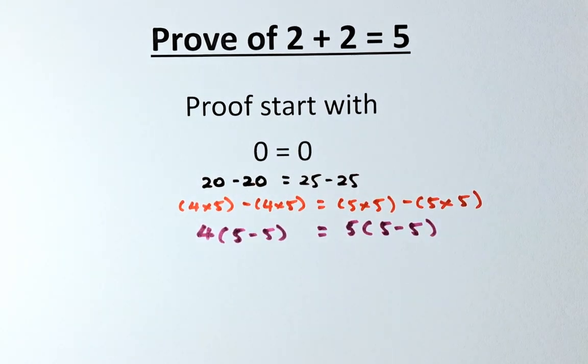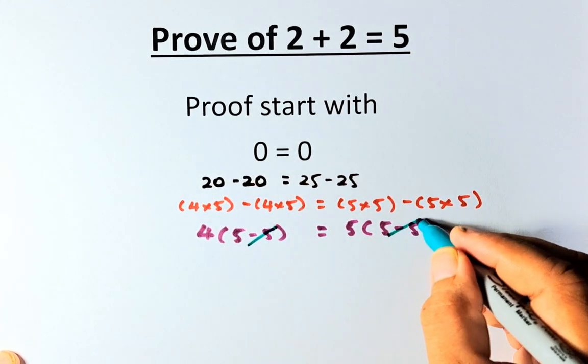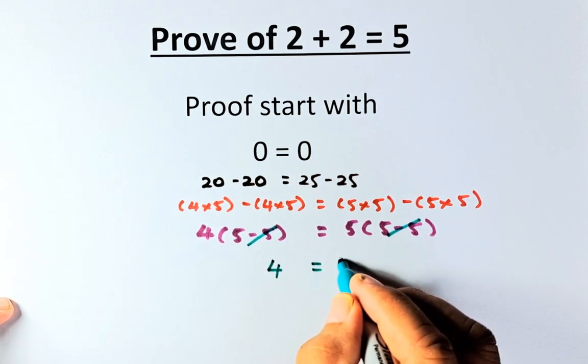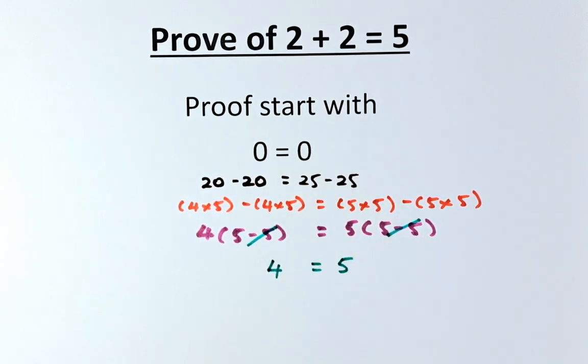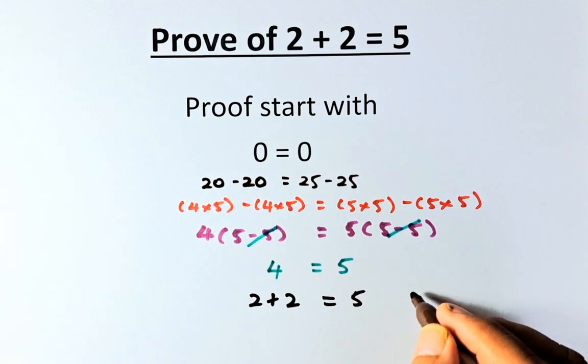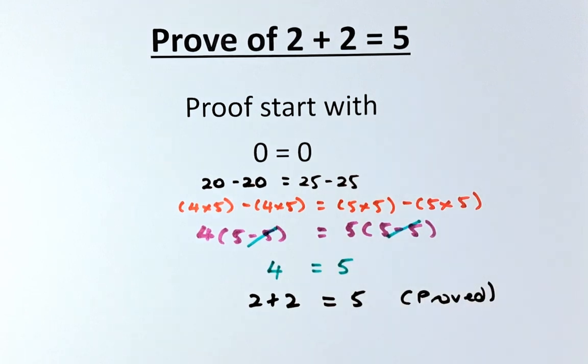Okay, so so far, so good. Now we are going to divide 5 minus 5 on both sides. So we are left with 4 equals to 5. So we know that 4 is the same as 2 plus 2. So 4 is the same as 2 plus 2 and that is equal to 5. So we have proved that 2 plus 2 is equal to 5.